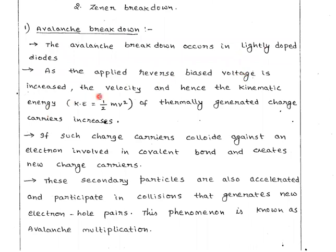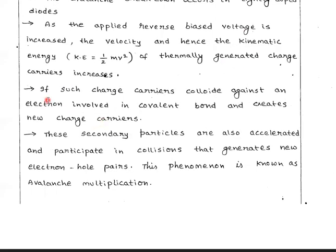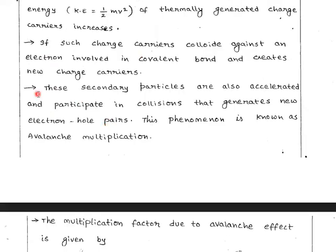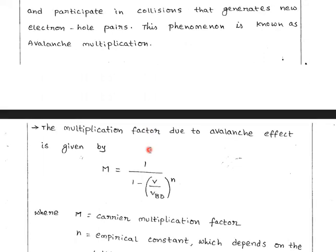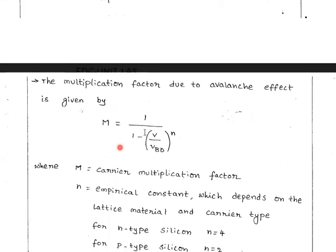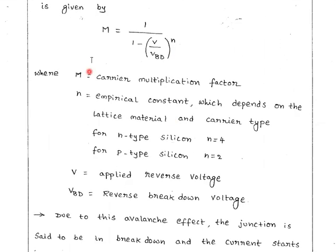As the applied reverse voltage is increased, the velocity and hence the kinetic energy of thermally generated charge carriers increases. If such charge carriers collide against an electron involved in a covalent bond, they create newly generated carriers. The secondary particles are also accelerated and participate in collisions that generate new electron-hole pairs. This phenomenon is known as avalanche multiplication. The multiplication factor due to avalanche effect is: M = 1 / (1 - (V / V_BD)^n).